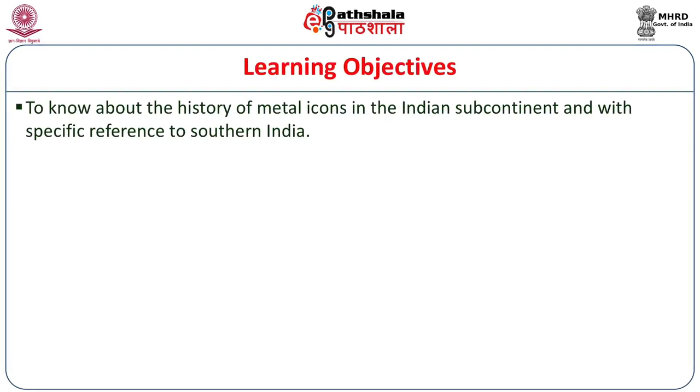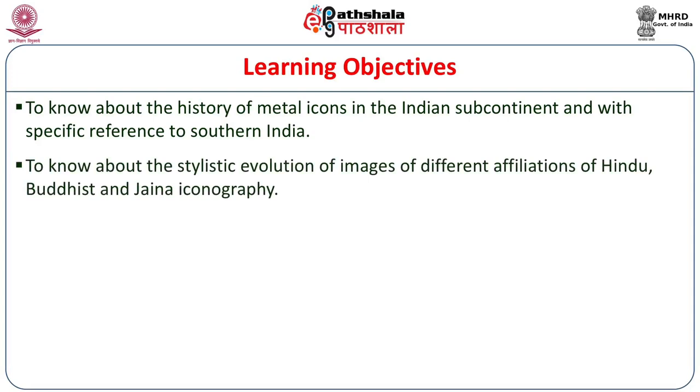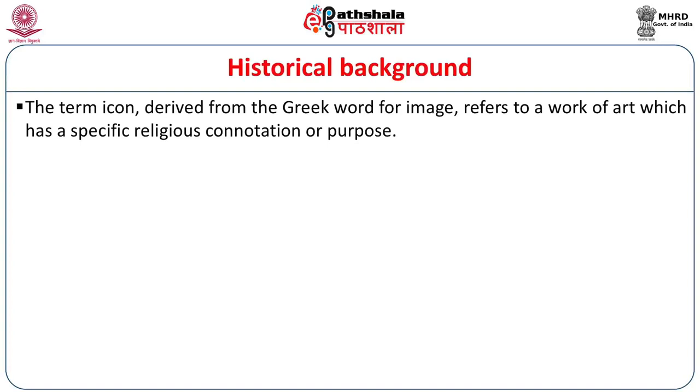The objectives of this module are to know about the history of metal icons in the Indian subcontinent, with specific reference perhaps to South India, and to understand the stylistic evolution of images of different affiliations — Hindu, Buddhist and Jain iconography — and to give a few insights into the technological trajectory. We've looked at Chola bronzes in another module; this module aims to explore other bronze casting techniques in various regions to get a totality of understanding of the technology and stylistic aspects of metal icons in the subcontinent.